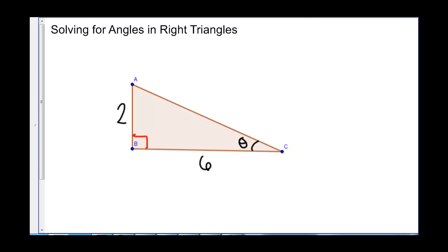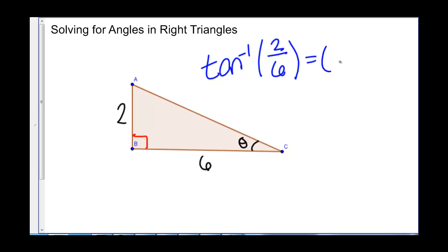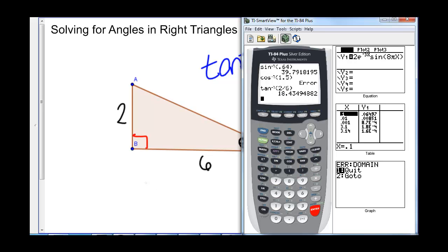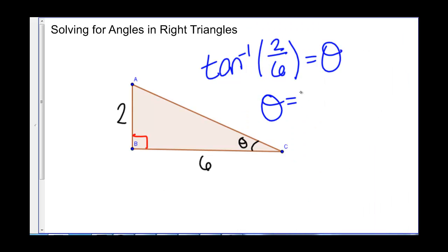We can also use inverse trig to solve for angles in right triangles. If we know the opposite side and the adjacent side, we use the inverse tangent of opposite over adjacent to get angle theta. So we look for the inverse tangent of 2 divided by 6, and that gives us 18.43 degrees.